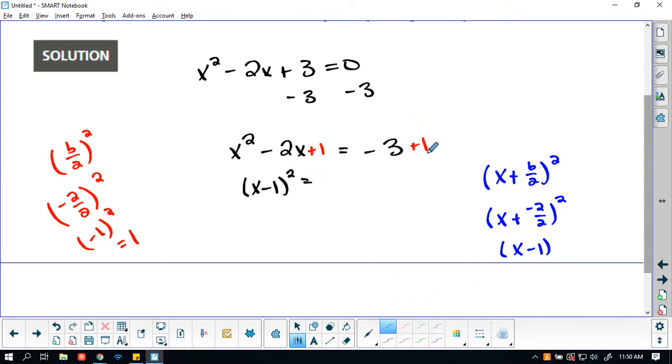On the right-hand side, we have -3 + 1, so that's -2. Now I want to solve—when I say solve, that means I want to find what values of x make this true. So let me take the square root. Here I have x - 1 equals the positive and negative square root of -2.